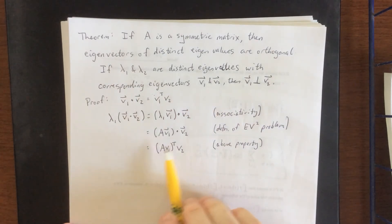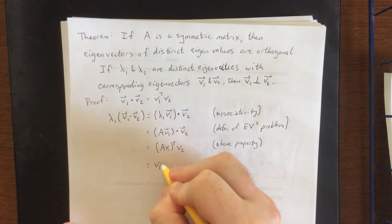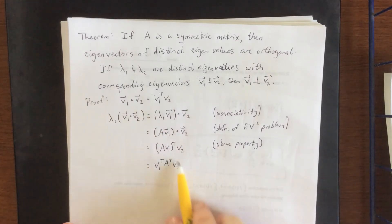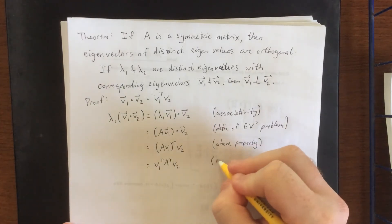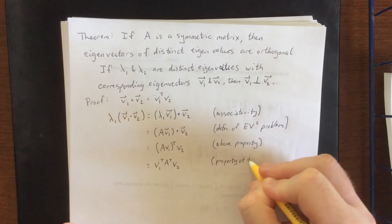Now when I apply a transpose to a matrix multiplication, I can take the transpose of those individual matrices, but I have to reverse the order. So all of this is matrix multiplication in here. So that's property of transpose.